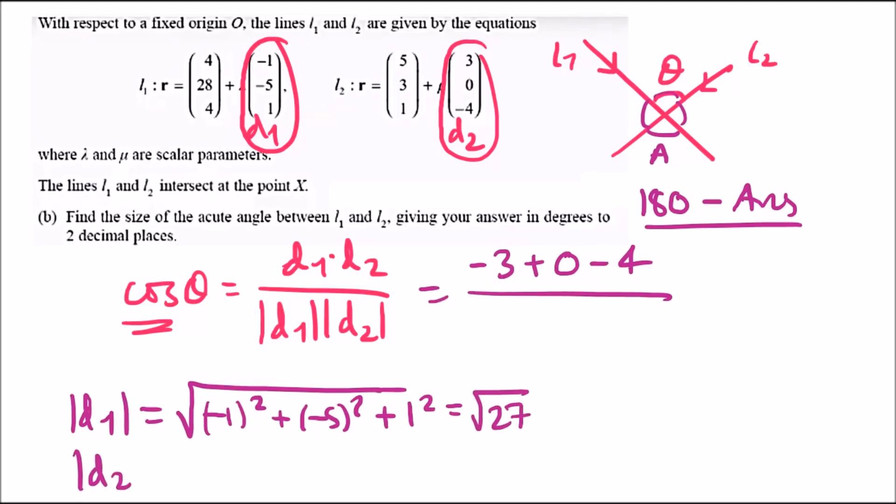The magnitude of d1 uses 3D Pythagoras: square root of minus one squared plus minus five squared plus one squared, which gives root 27. For d2, three squared plus zero squared plus negative four squared gives root 25, or just 5. So the denominator is 5 root 27.